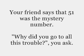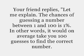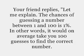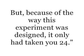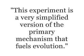Your friend says that 51 was the mystery number. Why did you go to all this trouble you ask? Your friend replies: the chances of guessing a number between 1 and 100 is 1%, meaning on average it would take you 100 guesses to find the correct number. But because of the way this experiment was designed, it only took you 24. Therefore, this experiment is a very simplified version of the primary mechanism that fuels evolution.